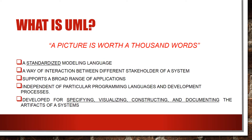So let's begin our discussion with a very fundamental question: What is UML? UML is a standard which is used across industries. It is a way of interaction between different stakeholders of a system. It supports a broad range of applications. UML is independent of a particular programming language and a development process. UML is used for specifying, visualizing, constructing, and documenting the artifacts of a system.